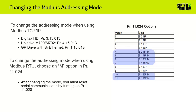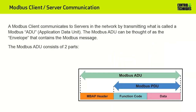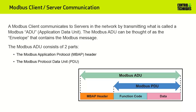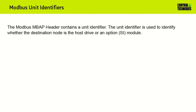A Modbus client communicates to servers in the network by transmitting what is called a Modbus ADU, or Application Data Unit. The Modbus ADU can be thought of as the envelope that contains the Modbus message. The Modbus ADU consists of two parts: the Modbus Application Protocol, or MBAP, header, and the Modbus Protocol Data Unit, or PDU. The Modbus MBAP header contains a unit identifier, which is used to identify whether the destination node is the host drive or an option module.